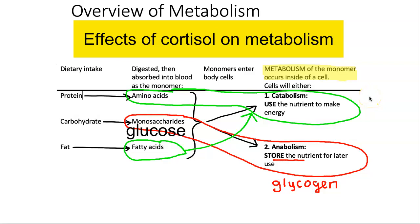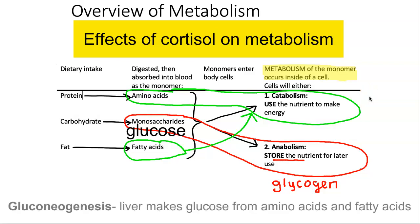Not only will fatty acids and amino acids be used preferentially above glucose under the effects of cortisol, but the liver can also use amino acids and fatty acids to make new glucose — a process called gluconeogenesis. So the overall effect of cortisol is to not utilize glucose, to save it for later, and to preferentially metabolize amino acids and fatty acids.